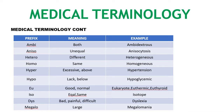To summarize the prefixes we have discussed: ambi means both; aniso means unequal; hetero means different; homo means same; hyper means excessive; hypo means below.